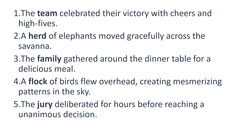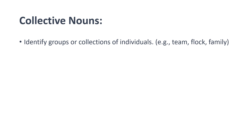Let's look at these sentences. 'The team celebrated their victory with cheers and high fives.' 'A herd of elephants moved gracefully across the savannah.' 'The family gathered around the dinner table for a delicious meal.' 'A flock of birds flew overhead, creating mesmerizing patterns in the sky.' 'The jury deliberated for hours before reaching a unanimous decision.' So team, herd, family, flock and jury are the nouns. All these nouns represent groups or collections of individuals — in a team there are more than one person, in a flock there are a lot of birds. These are called collective nouns.